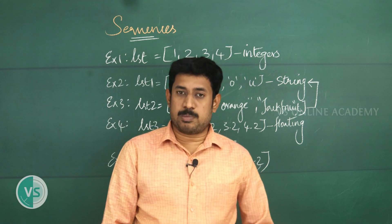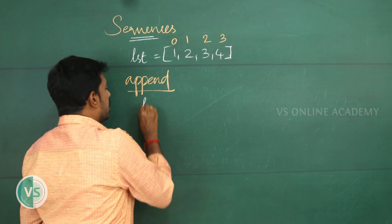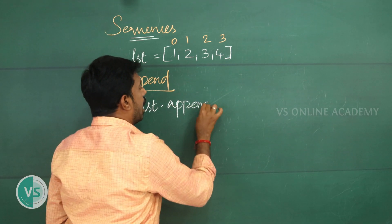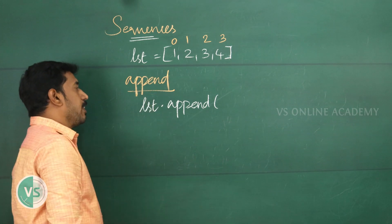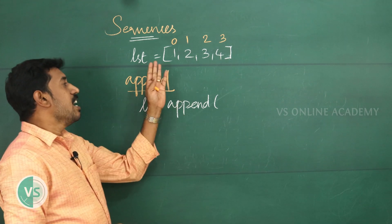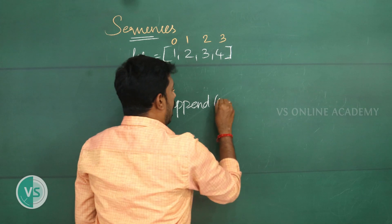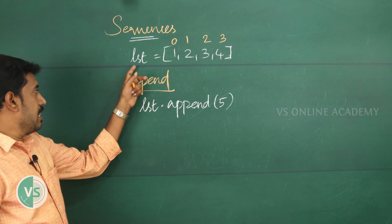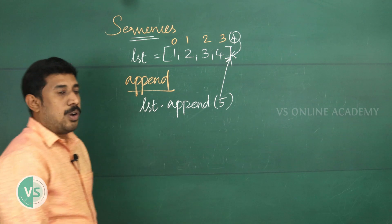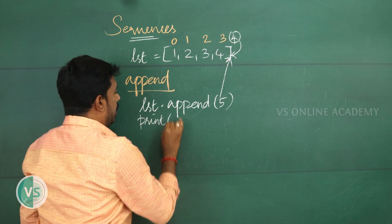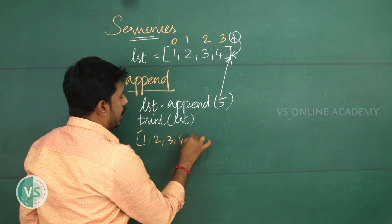What is mutable? Mutable means editable, modifiable, changeable. Is it possible to change the value defined inside the list? Yes, it is possible. The append function is used for this — its syntax is list.append(value). The functionality of append is to insert a single element into the existing list, especially at the end. If we print the list after appending 5, the output will become 1, 2, 3, 4, 5.